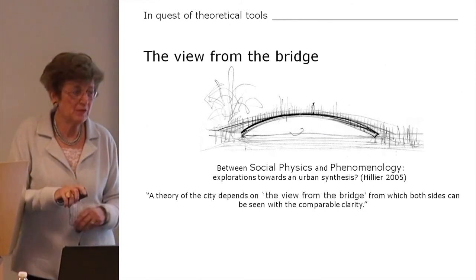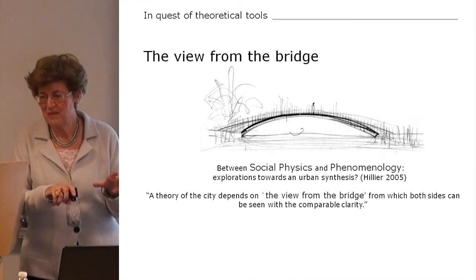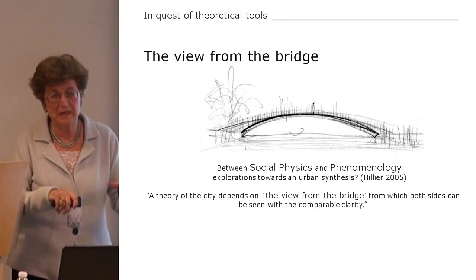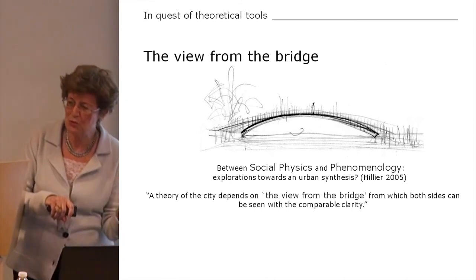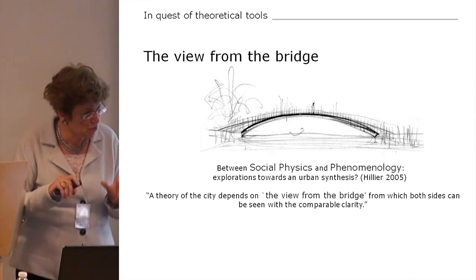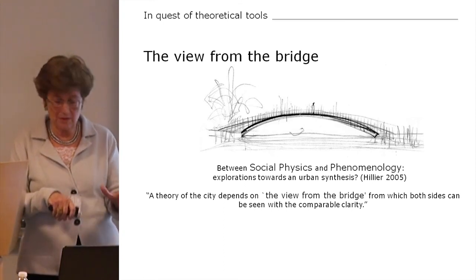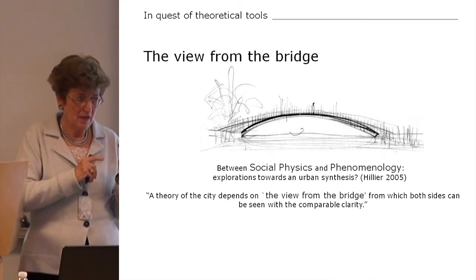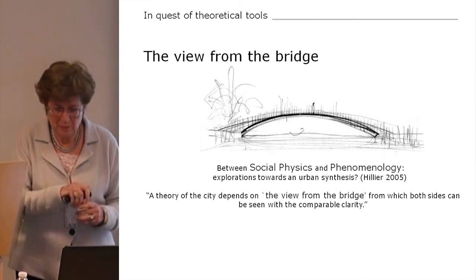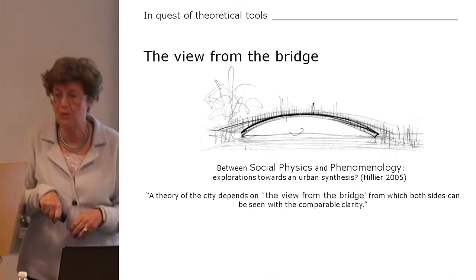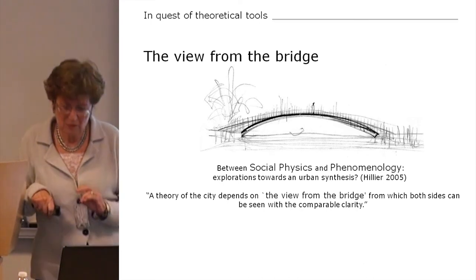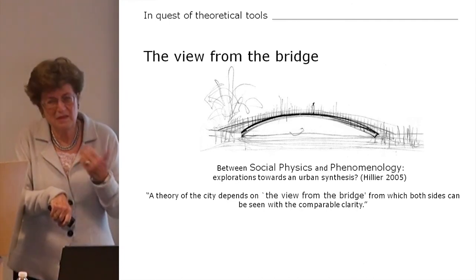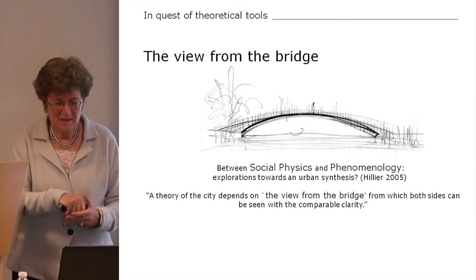For this we need theoretical tools. Broadly speaking, there are two different ways of thinking: one is the analytical — the social sciences, the computer kind of analysis — and the other is, broadly speaking, a phenomenological point of view. The rift between the two has taken serious dimensions over time. But today, a lot of voices speak in favor of bridging this rift. Helio himself is in favor of such an approach, and in his article 'Between Social Physics and Phenomenology,' he explores the way you can have an urban synthesis by taking the view from the bridge, where you can see both sides equally.